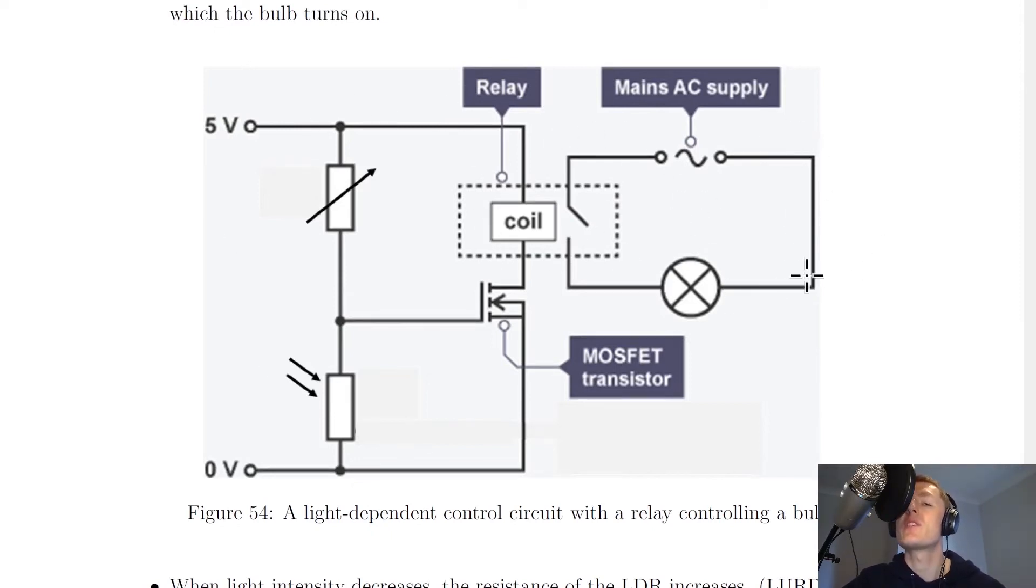We've then got a MOSFET, and then we've got our relay switch where we've got our coil and our switch. And then the second circuit we've got mains AC supply and a bulb.